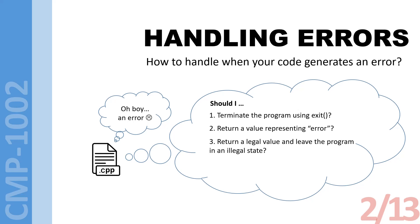The third option is the function can return a legal value and leave the program in an illegal state — intentionally returning a legal value so the program doesn't crash, but some variables, objects, or memory allocations couldn't be done as intended. You are just shooting in the dark, hoping the program doesn't crash. This may work on some occasions, but more often it will cause problems in the long run. You will not find the bug for weeks after shipping — so in my opinion, option three is even worse than option two.